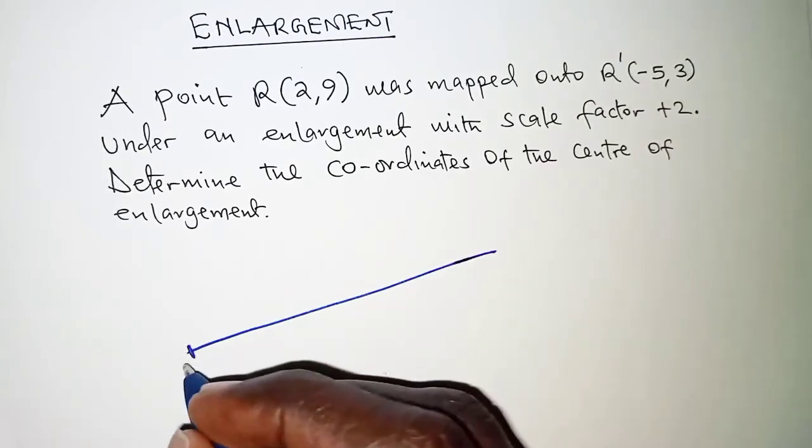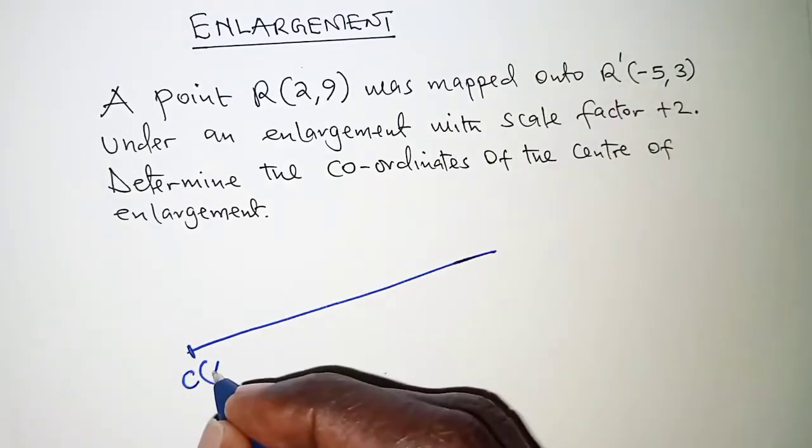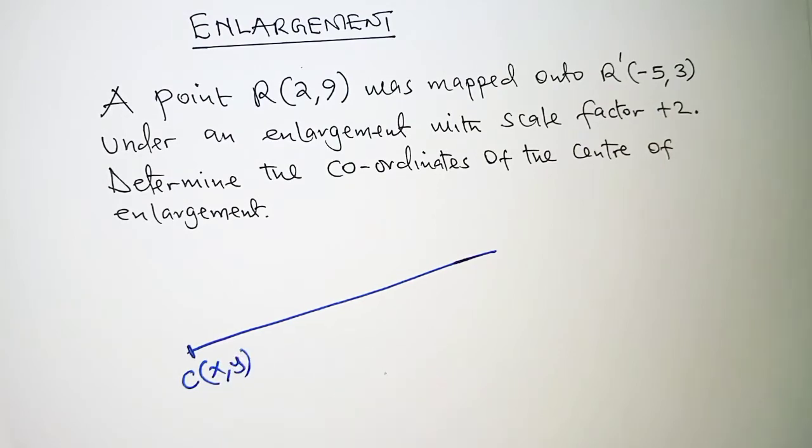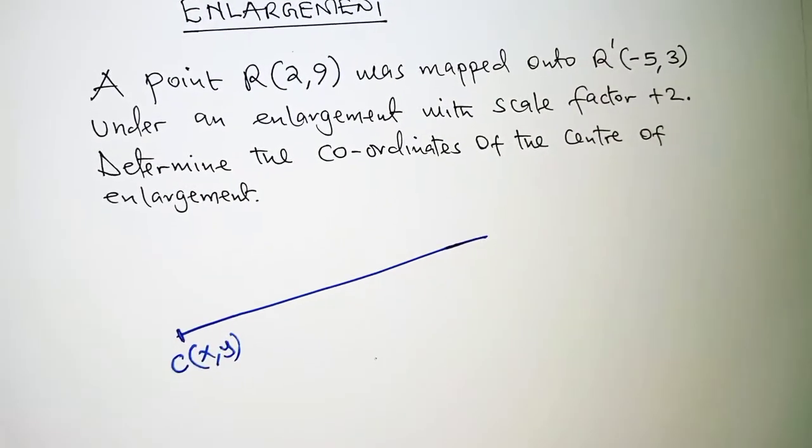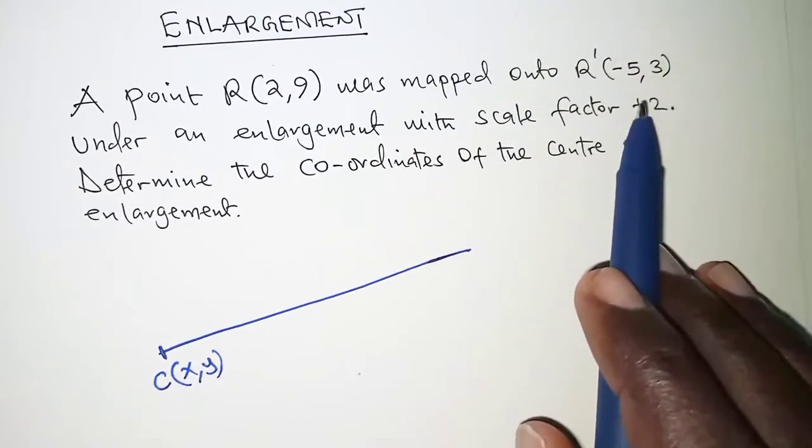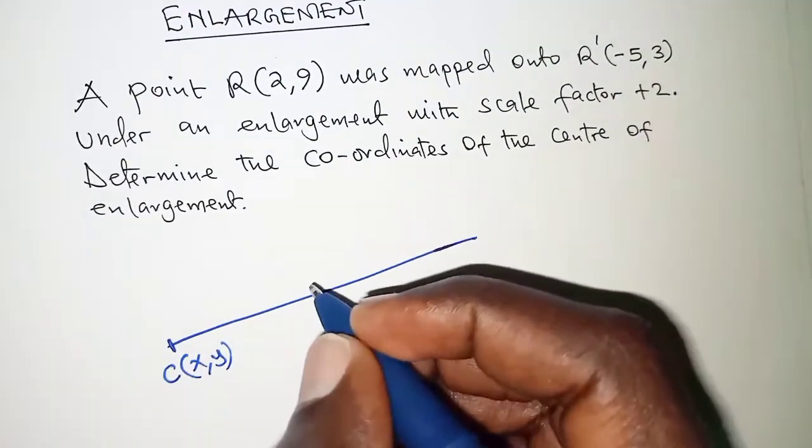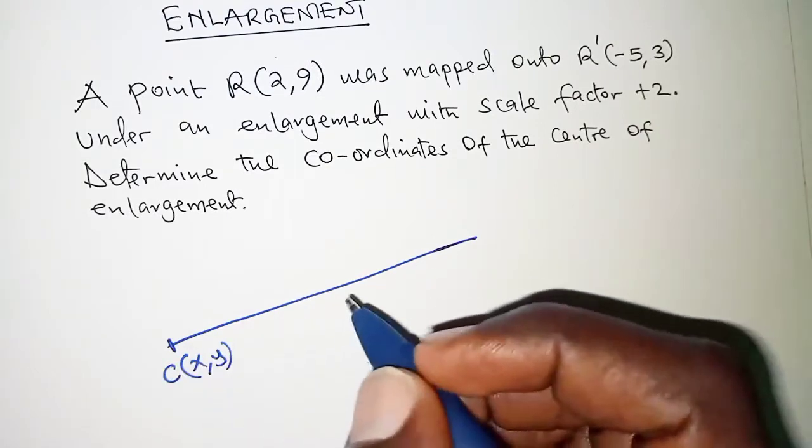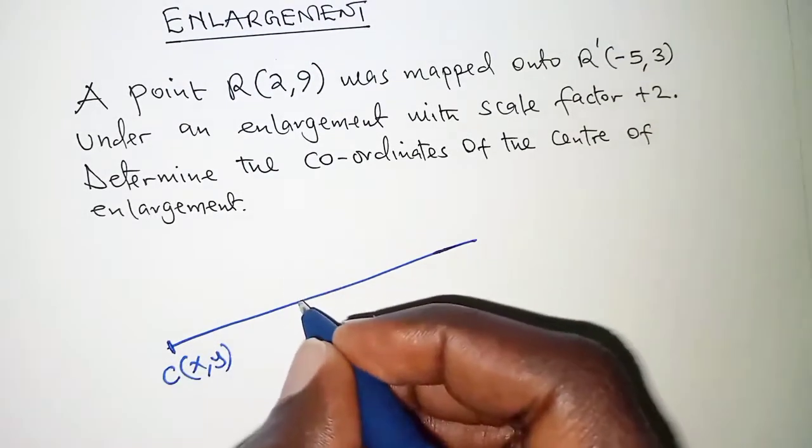Let's have this as the center point C whose coordinates is given by X, Y. Remember that for a positive scale factor both the object and the image are on the same side of the center of enlargement.